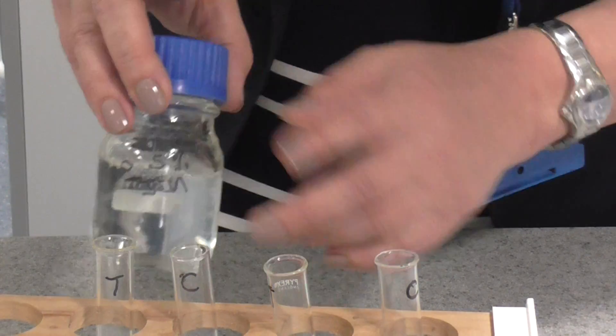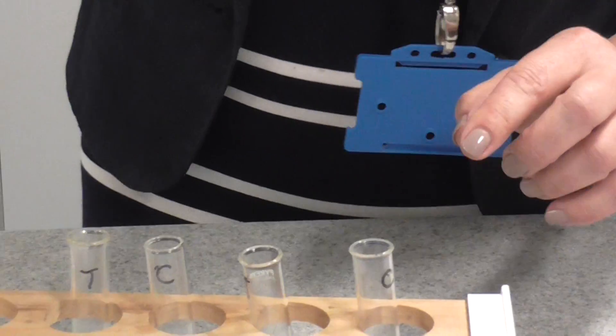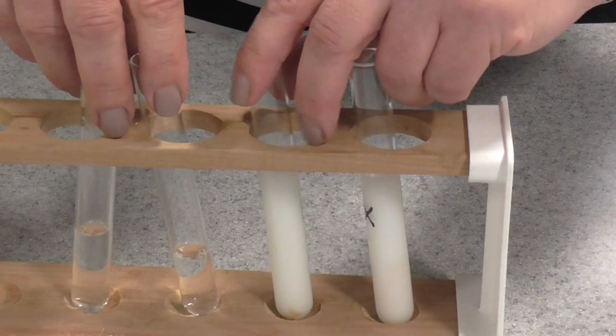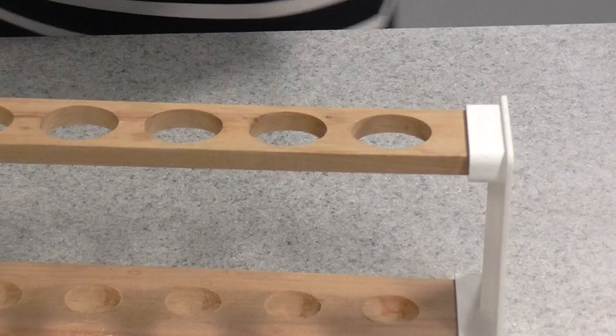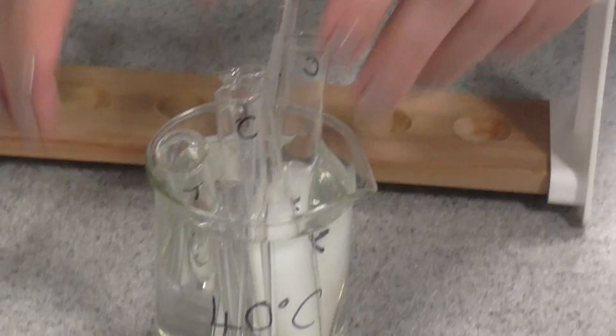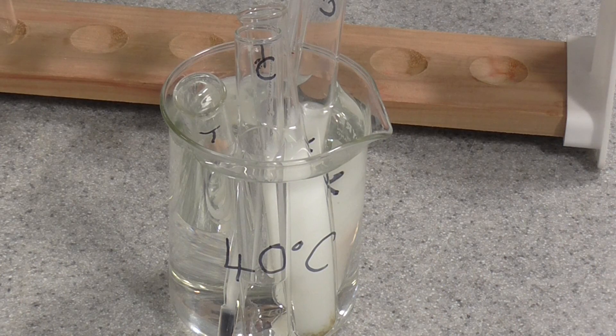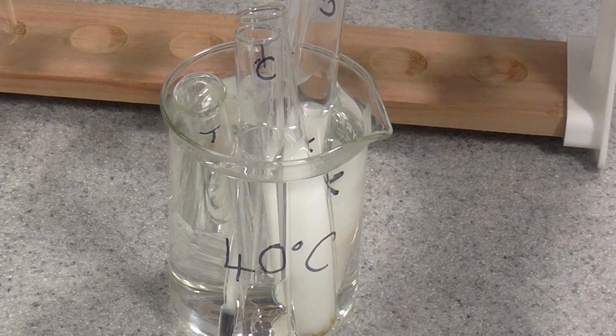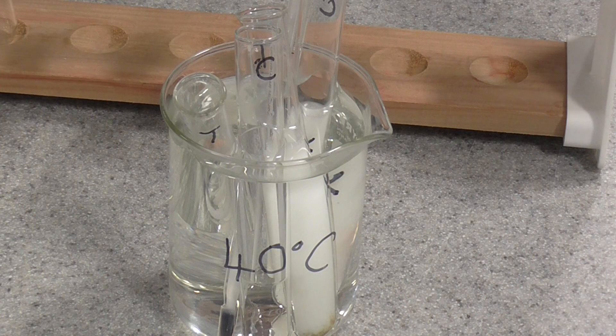Before we mix the enzyme and the milk, we need to make sure that everything is at the right temperature. So, you're going to place these in the water bath, and you're going to leave them in there for maybe 5 minutes until they actually come to 40 degrees. You want all your solutions at 40 degrees before you mix them.